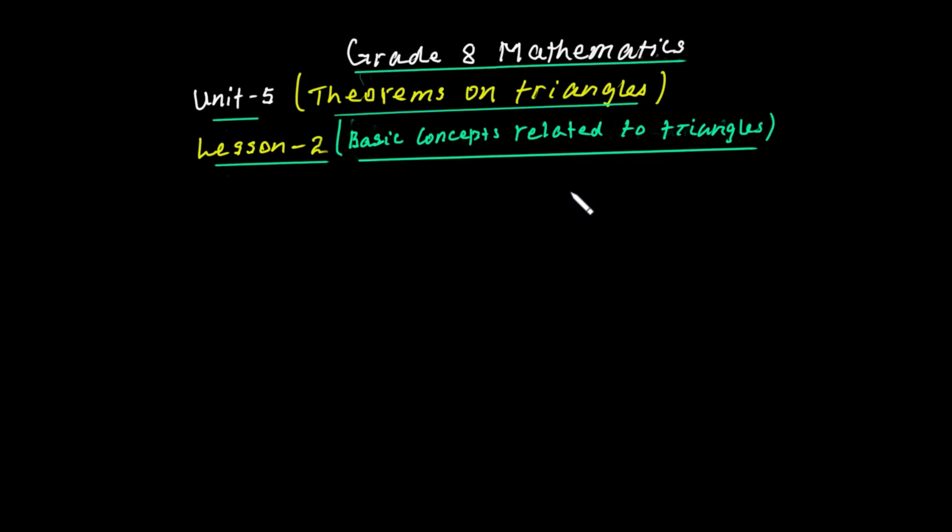If two angles have the same vertex and a common side, but with no common interior points, then the angles are called adjacent angles. The common vertex and common side define adjacent angles, but there must be no common interior point.